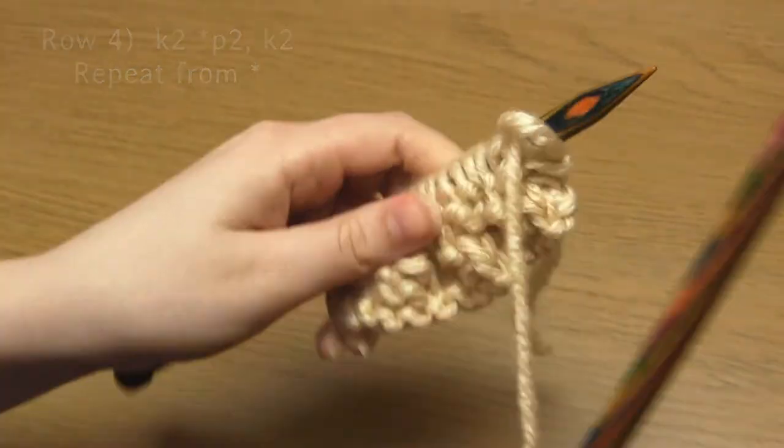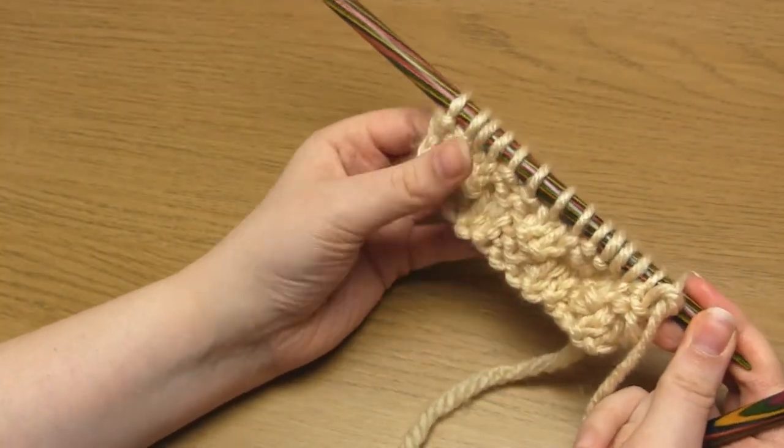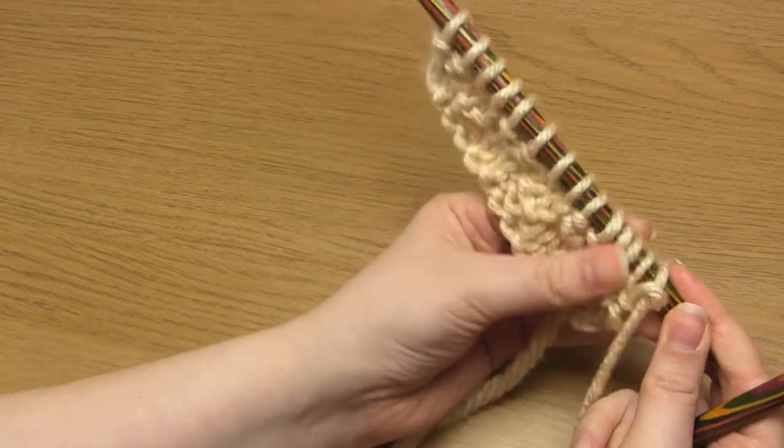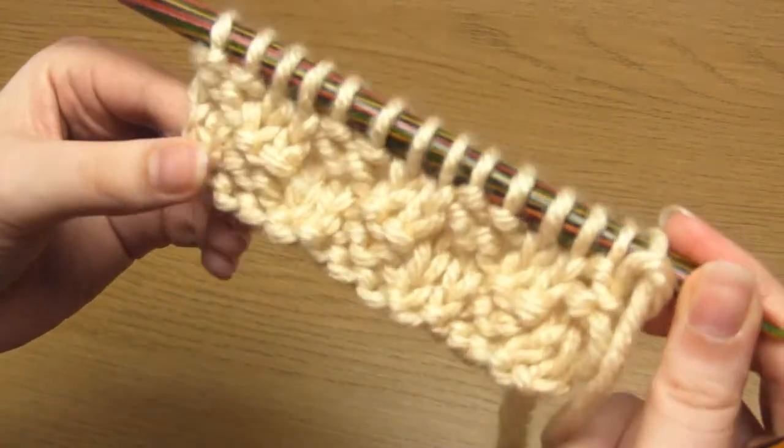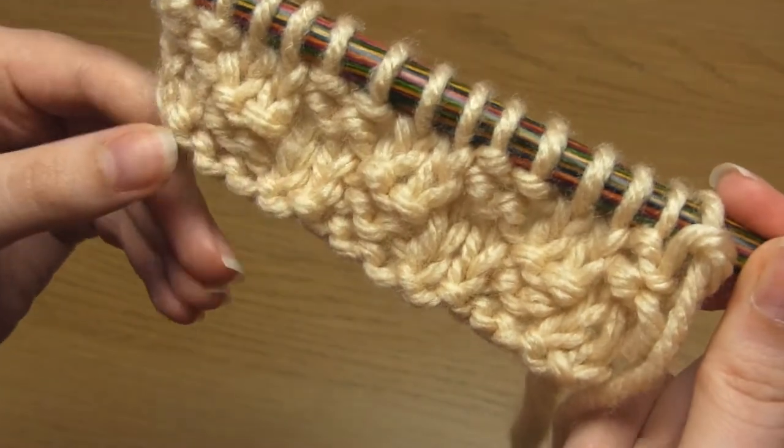So basically on rows two and four you're knitting the knits and purling the purls. And on rows one and three, you're knitting the purls and purling the knits. And that's it. That's the four row pattern repeat.